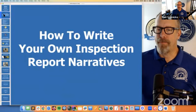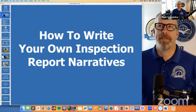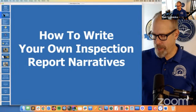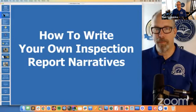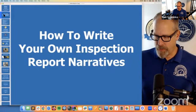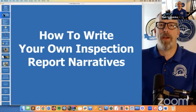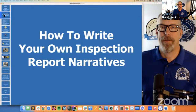Right now we're going to talk about how to write your own inspection report narratives. What's a narrative? I hate that word — it's really a sentence, a group of sentences, a paragraph or a phrase. A narrative is something you use as a home inspector to communicate your observations. You put those narratives in an organized fashion in a report and give that report to your client. We're going to talk about how to write and build your own narratives — sentences, paragraphs, observations in written form.